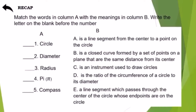Let us now have the answers. For number 1, the correct answer is letter B. A circle is a closed curve formed by a set of points on a plane that are the same distance from each center. Number 2, letter E. Diameter is a line segment which passes through the center of the circle whose endpoints are on the circle. Number 3, letter A. Radius is a line segment from the center to a point on the circle. Number 4 is letter D. Pi is the ratio of the circumference of a circle to its diameter. For number 5, letter C. Compass is an instrument used to draw circles.